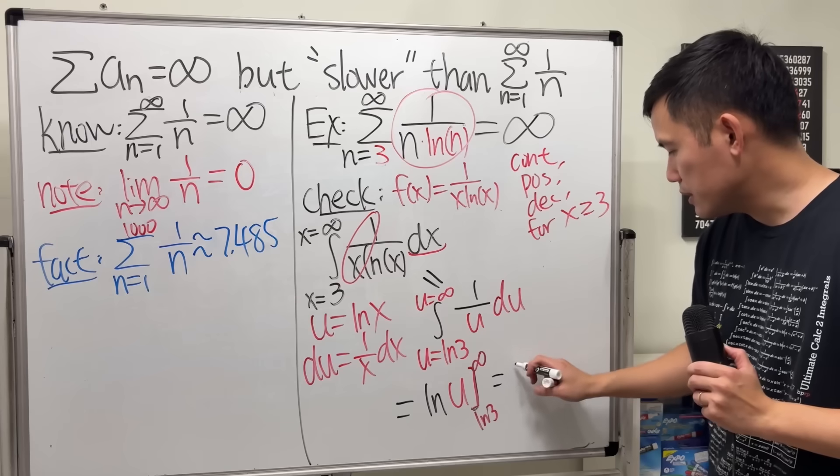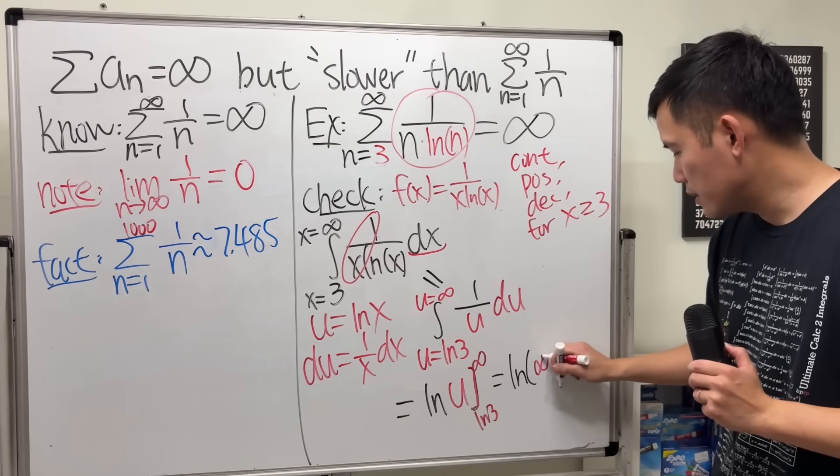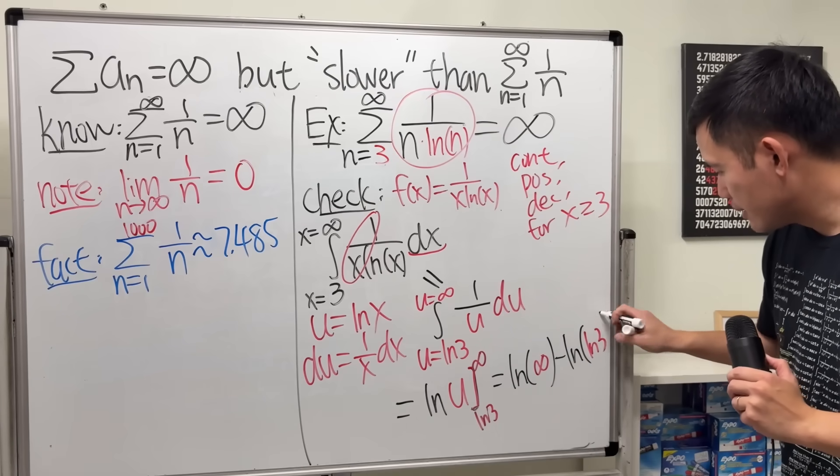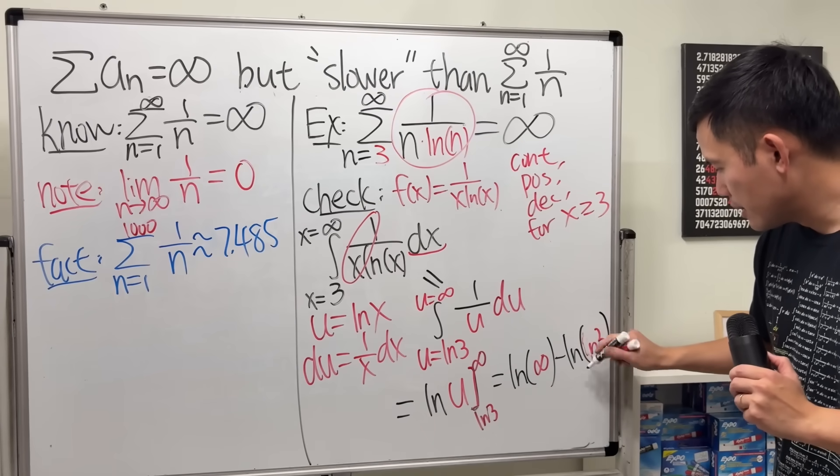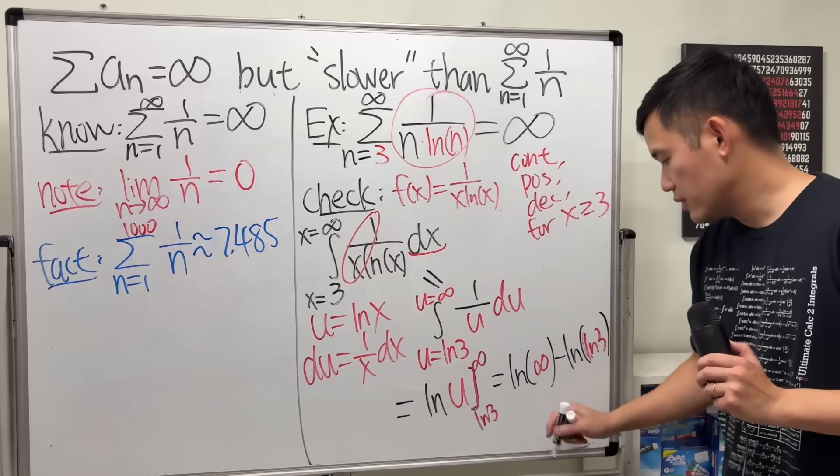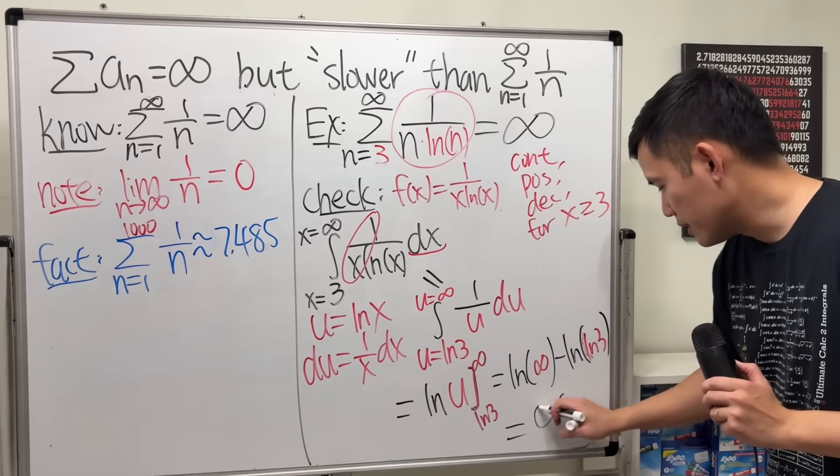Put the infinity down first, so we have ln of infinity minus ln of that. However, this is finite. ln of infinity is infinity, so all in all, that will give us infinity.